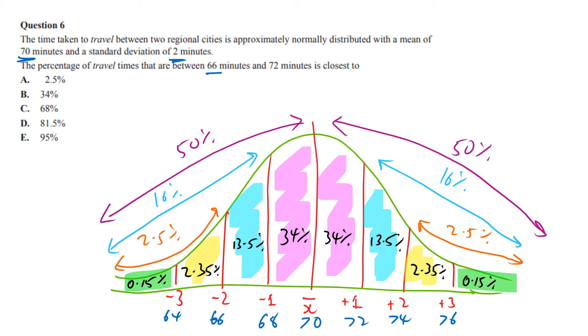Between 66 and 72 is this area. We've got to add up this, this, and this. If you add up 34, 34, and 13.5, you will get 81.5%.